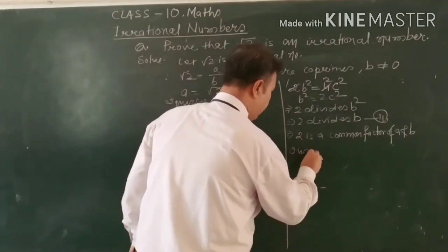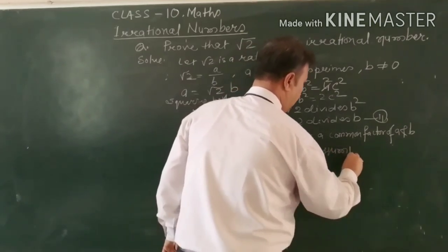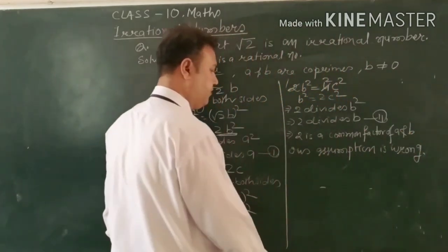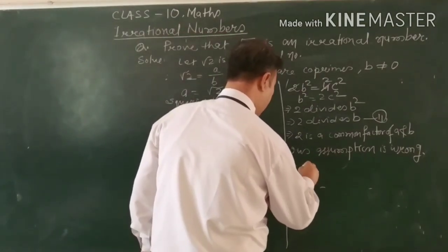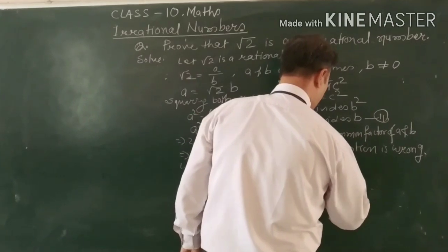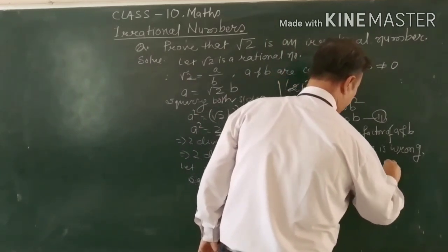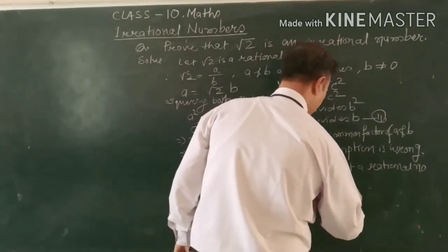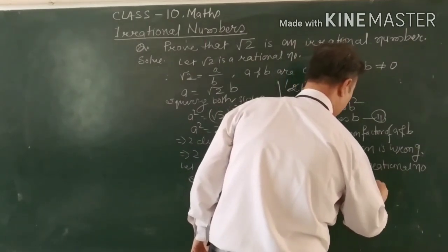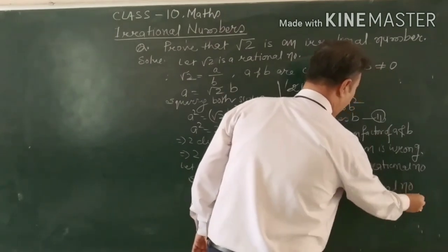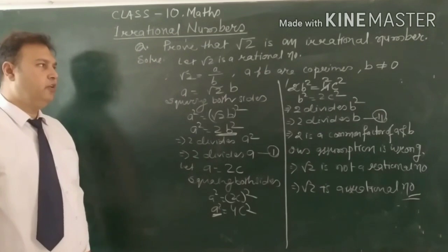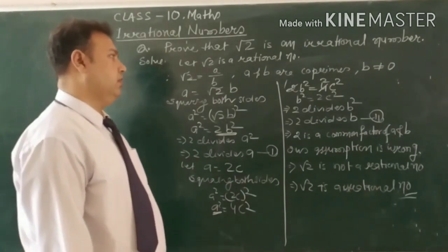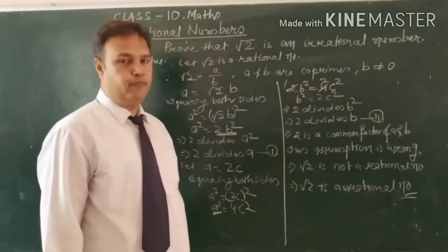This means our assumption is wrong. Therefore, root 2 is not a rational number — implies root 2 is an irrational number. In this way you can prove root 3, root 5, root 6, root 7 — all numbers of this form — are irrational.